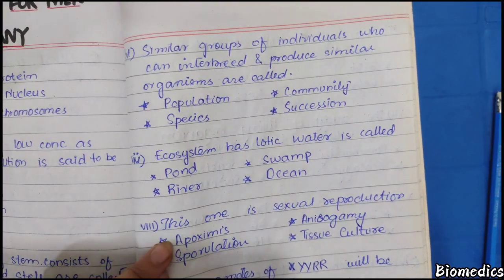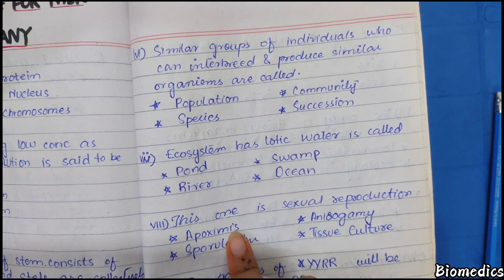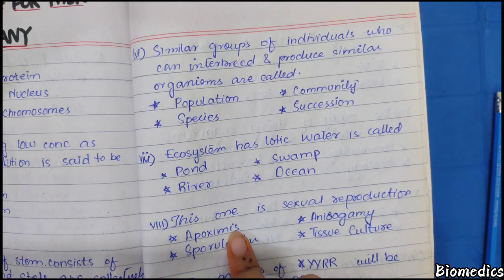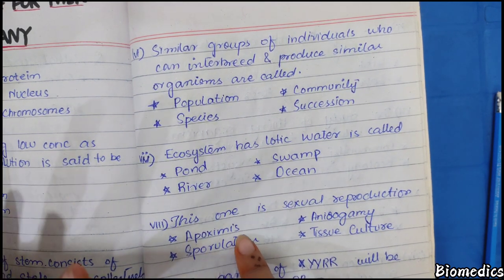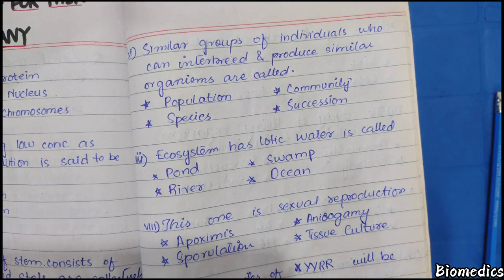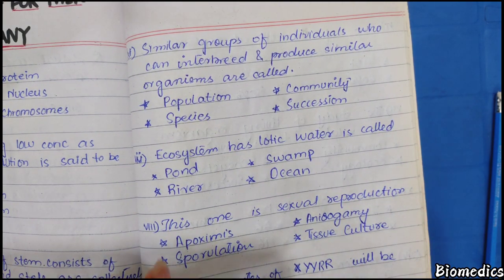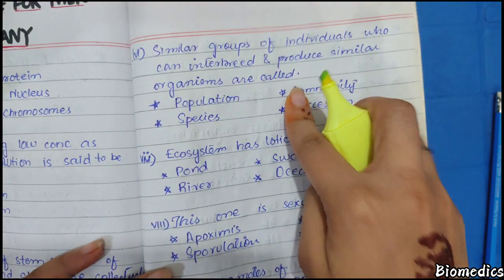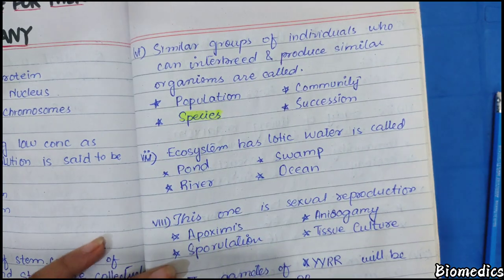Next: a similar group of individuals which can interbreed and produce similar organisms — what do we call it? You should remember that similar individuals that can interbreed — this is the exact definition of a species.